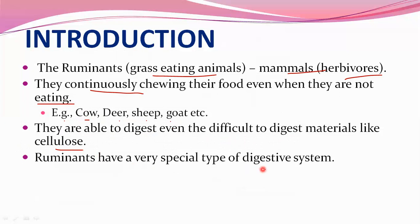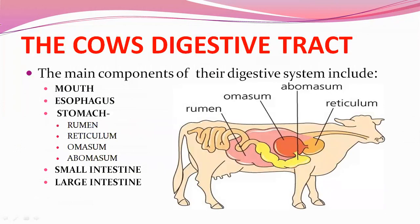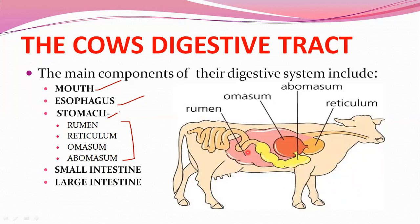Ruminants have a very special type of digestive system. A four-chambered stomach is a peculiar characteristic of these animals. The main components of the cow's digestive system include the mouth, esophagus — also called the food pipe — and a stomach consisting of four compartments: rumen, reticulum, omasum, and abomasum. These are the four compartments of the stomach, followed by the small intestine and large intestine.